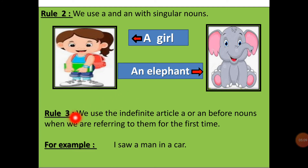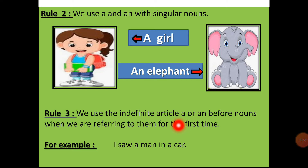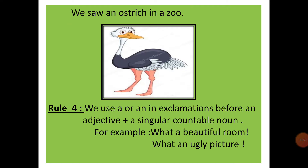Next rule: we use the indefinite article a or an before nouns when we are referring to them for the first time. 'I saw a man in a car.' Here, man and car we are using for the first time, that's why a comes. 'We saw an ostrich in a zoo.' Here again, we are using this word for the first time, that's why an comes — an ostrich.